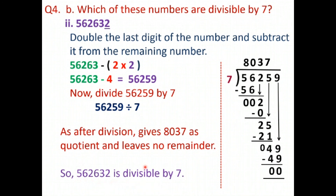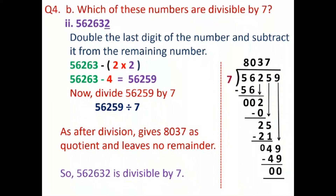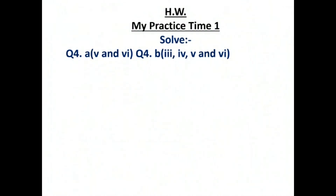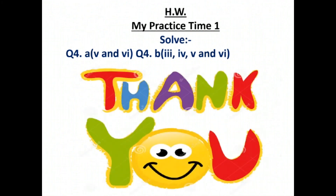Because the remainder is 0, 562632 is divisible by 7. This is your home task children. Do this and keep your copies complete. Thank you.